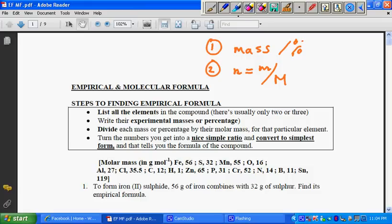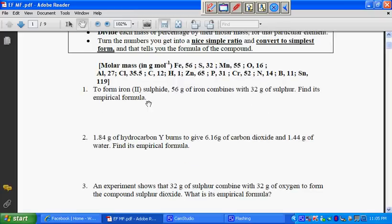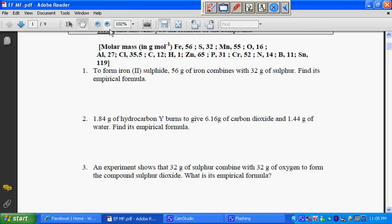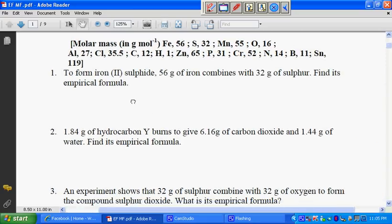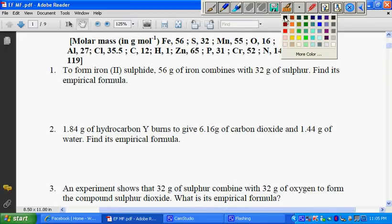Now we want to scroll through this document and solve the questions one by one. Let's see number one: to form iron(II) sulfide, 56 grams of iron combines with 32 grams of sulfur. Find its empirical formula. So I'll position this and enlarge it a bit to have a clearer view. Now we want to go through it step by step.